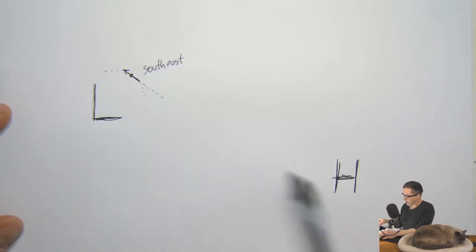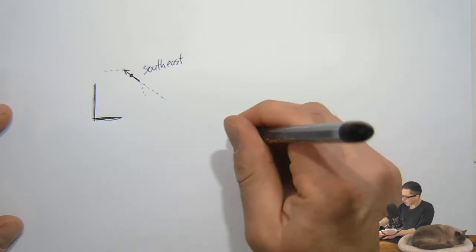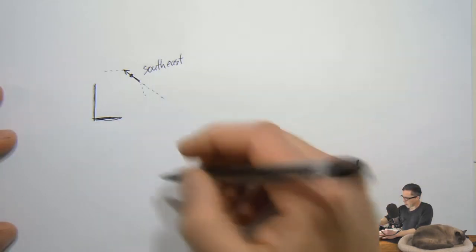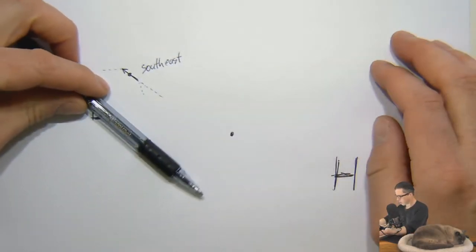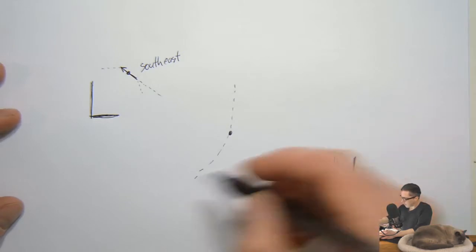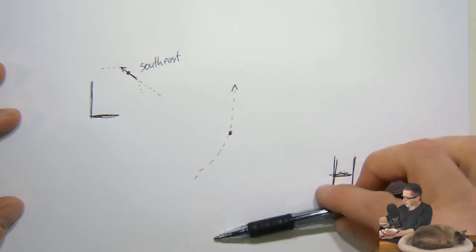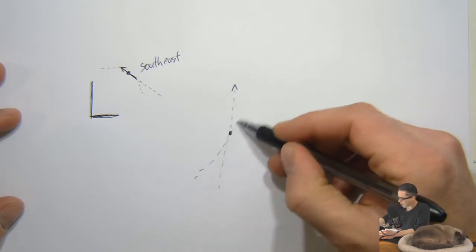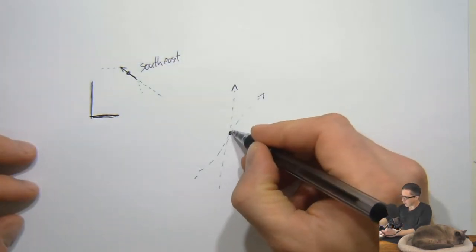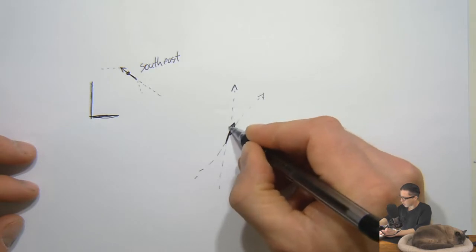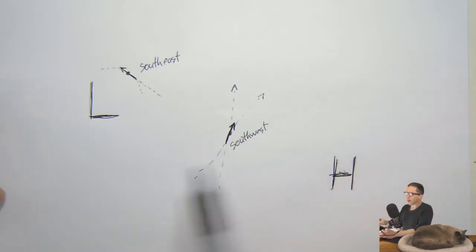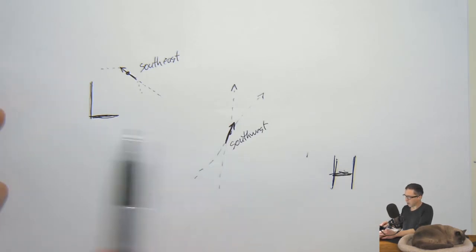If you've got multiple pressure centers — like a high and a low — and you've got a point in the middle, do you use the high or the low? If you use the low, imagine a circle centered on the low coming this way. If you imagine the high, you'd have an arc going clockwise around the high, counterclockwise around the low. The tangent to either one gives you the same answer — in this case, it's from the southwest. If you have a high and a low with a point in the middle, it doesn't matter how you think of it, you'll get the same answer.